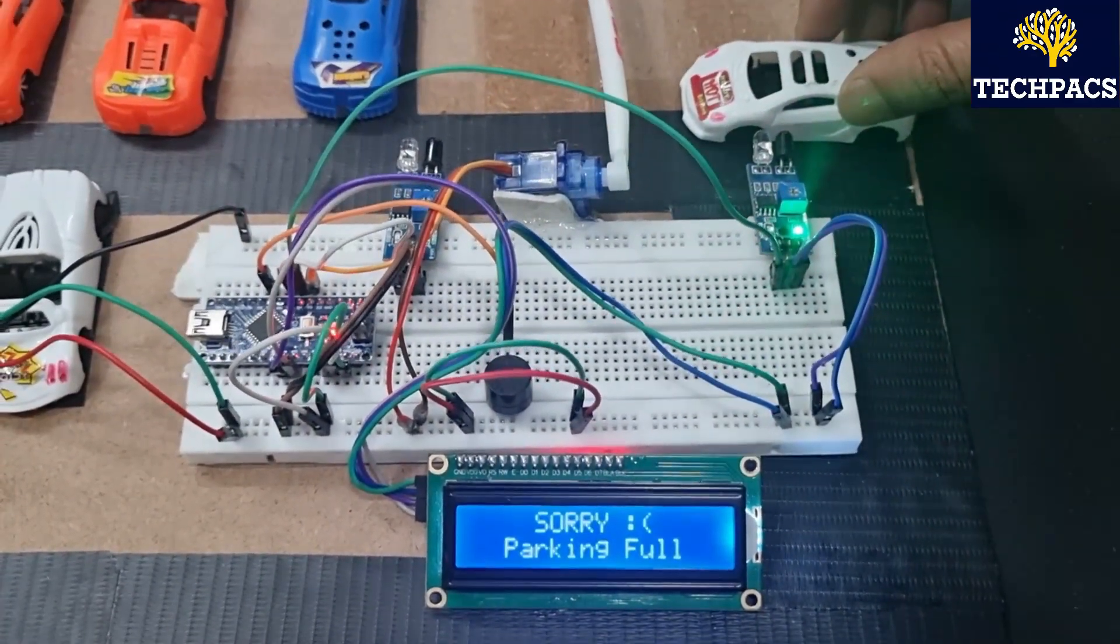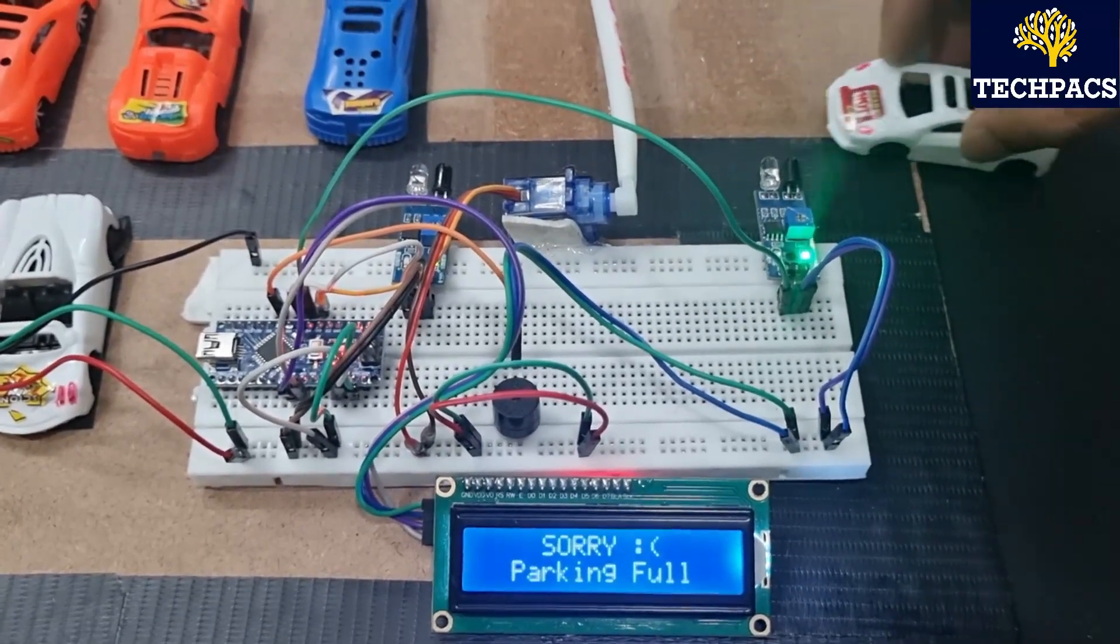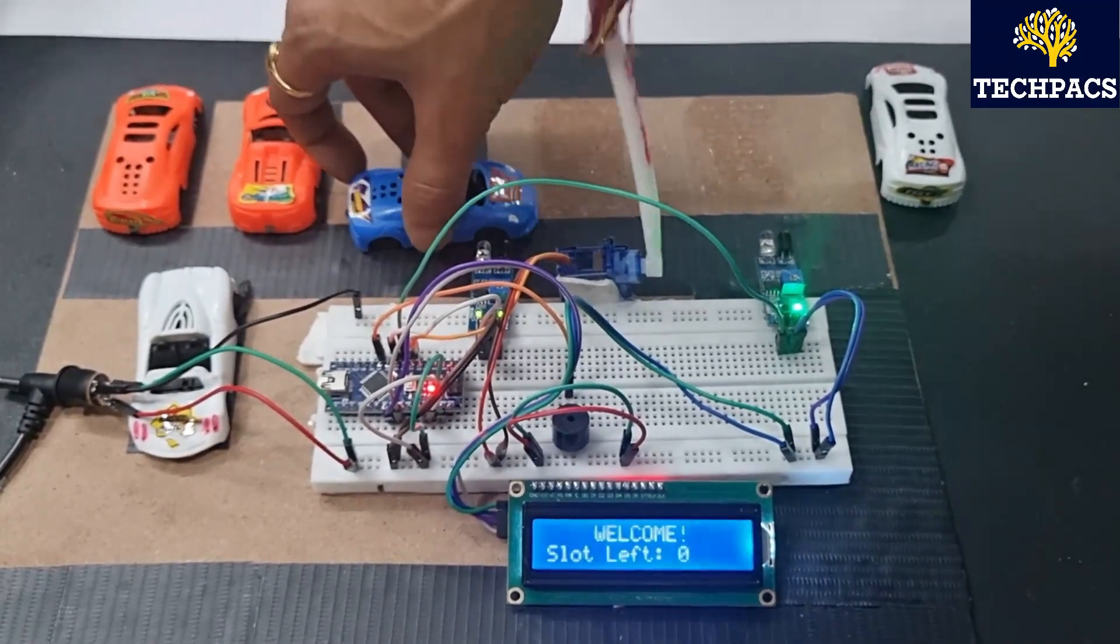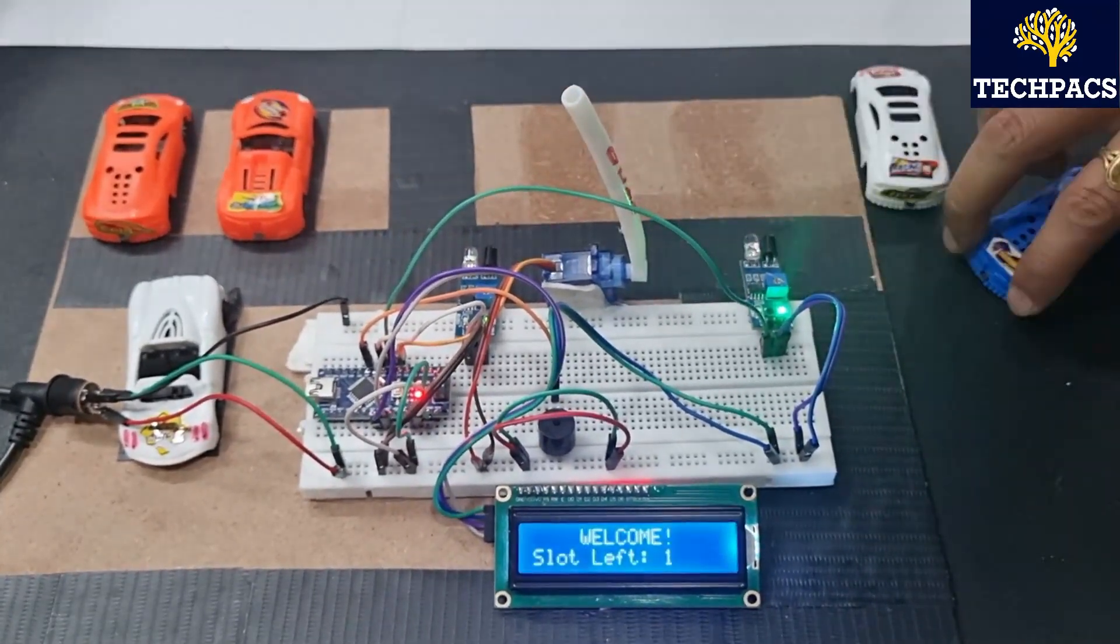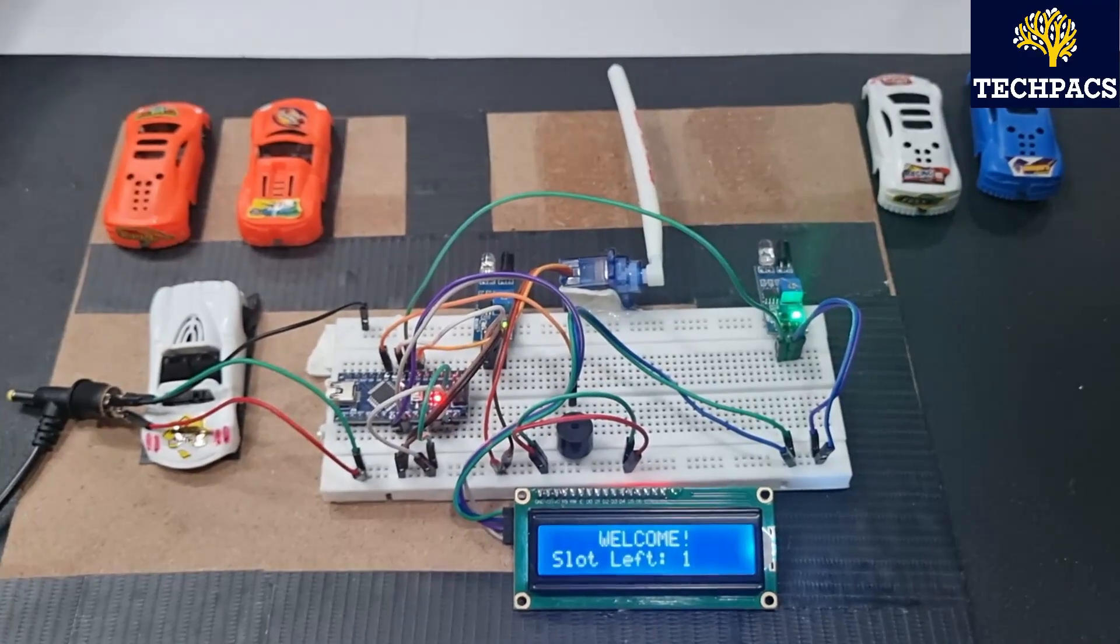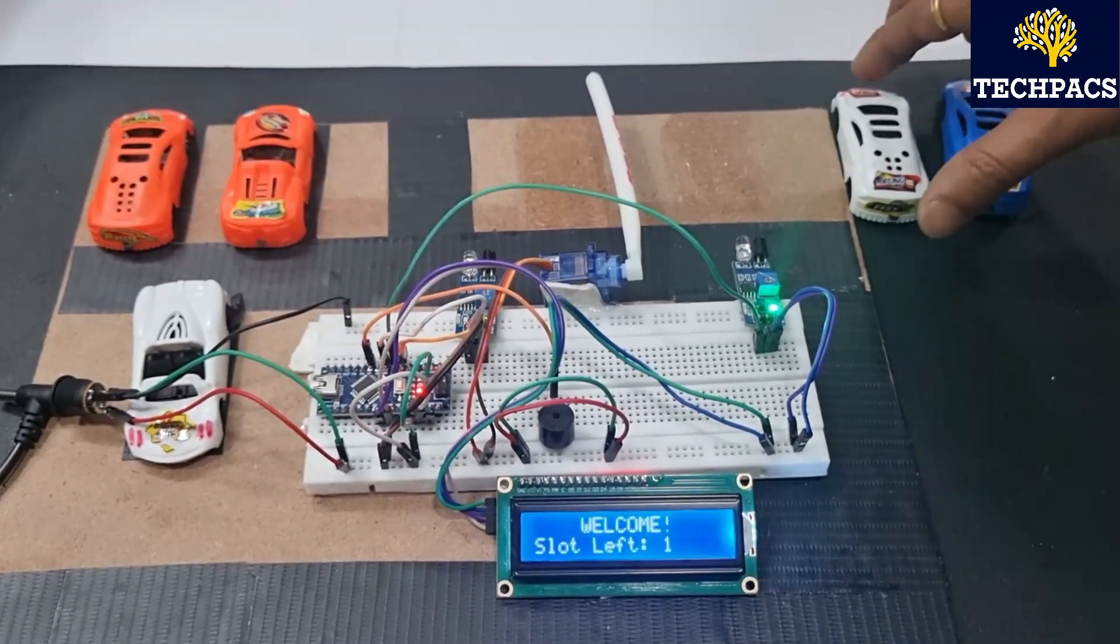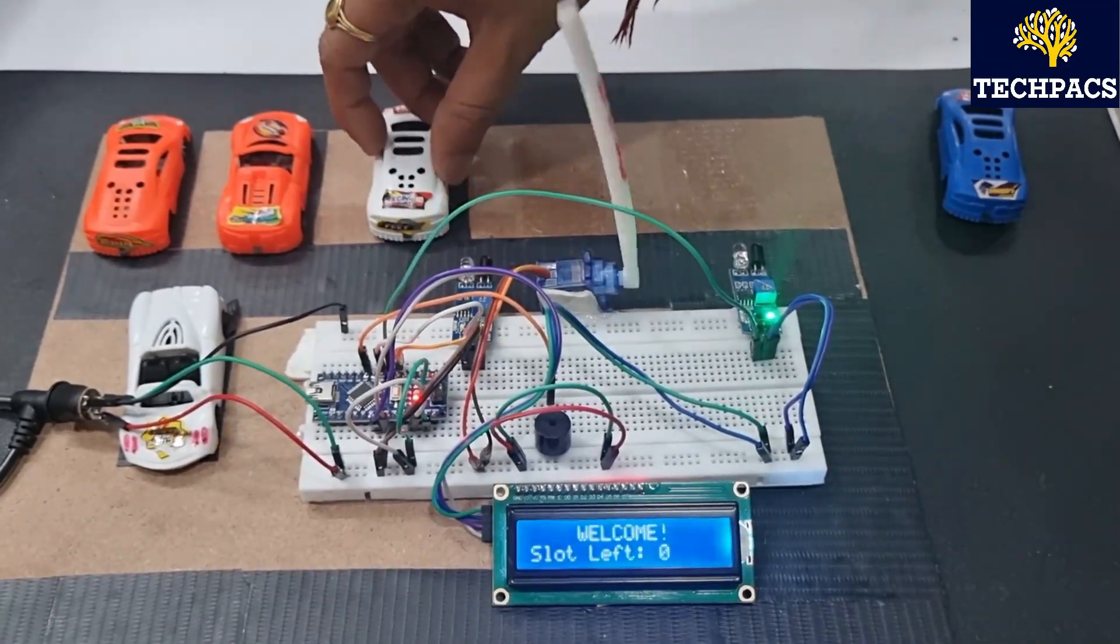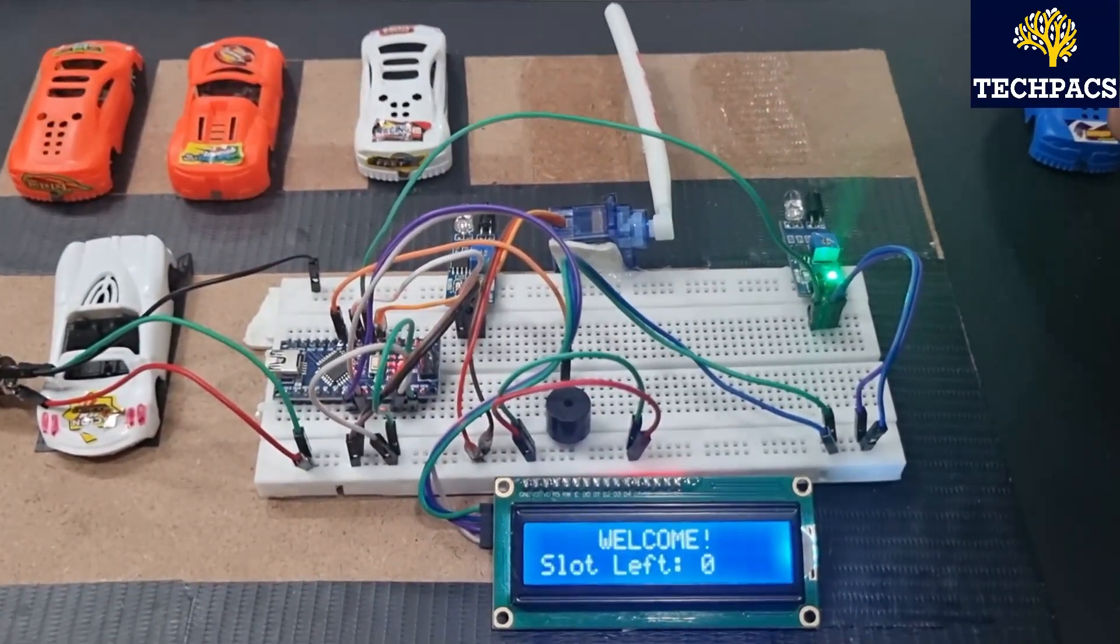Now if we remove this car out of here, you can see that the slot left is one. Now if we desire to park the car here, here we can go. Now the slots left are zero again.